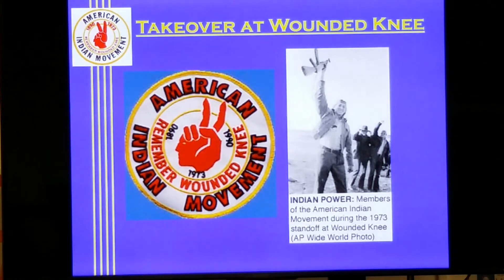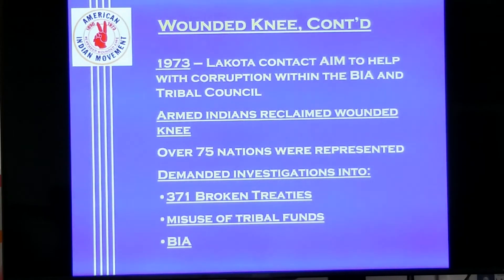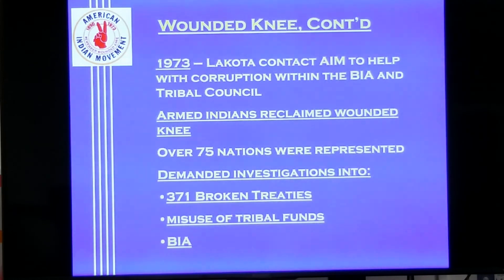The last big event is the takeover of Wounded Knee in 1973. The Lakota contacted AIM to help with corruption within the Bureau of Indian Affairs and the Tribal Council placed above them. Armed Indians decided to reclaim Wounded Knee, the scene of a famous battle between Indians and American forces. Over 75 nations were represented. They demanded investigation into 371 broken treaties between the United States and different tribes, the misuse and stealing of tribal funds, and corruption at the Bureau of Indian Affairs.